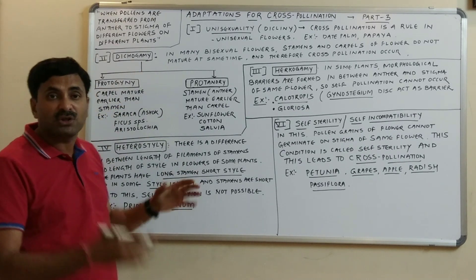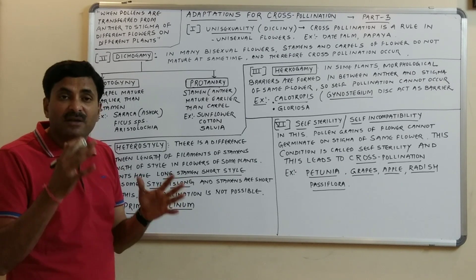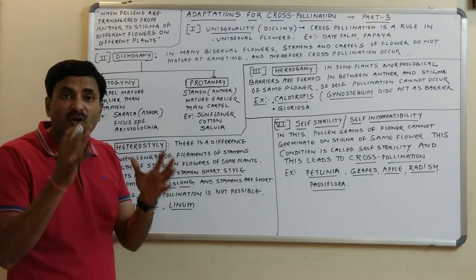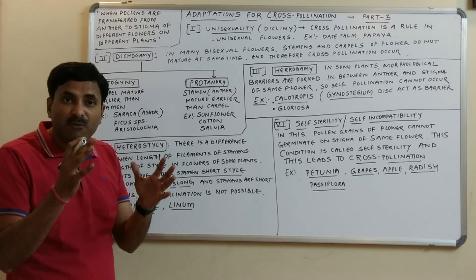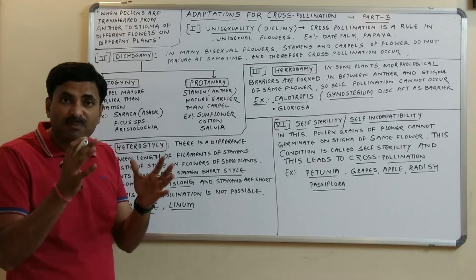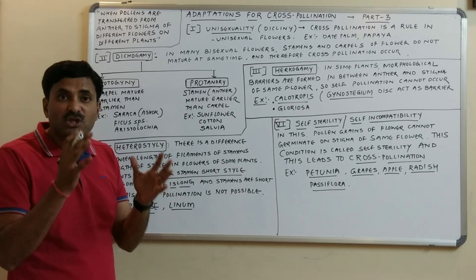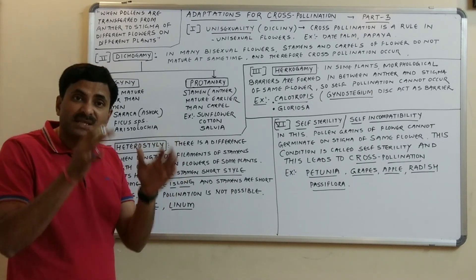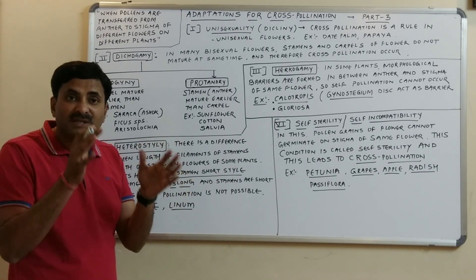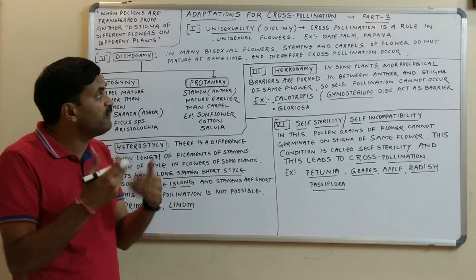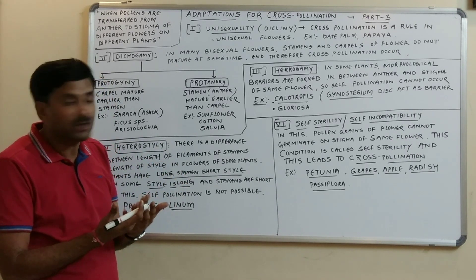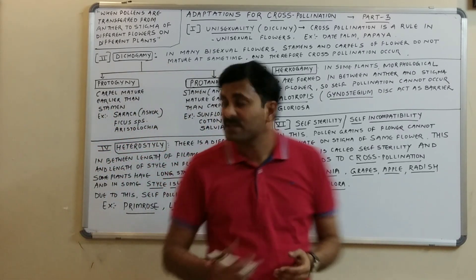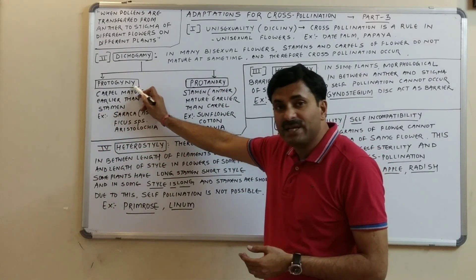The second adaptation is dicogamy. In a bisexual flower, the male and female reproductive organs — the stamens and the carpel — mature at different times. So though it is a bisexual flower, it will never favor self-pollination; instead, cross-pollination will be favored. This is called dicogamy.